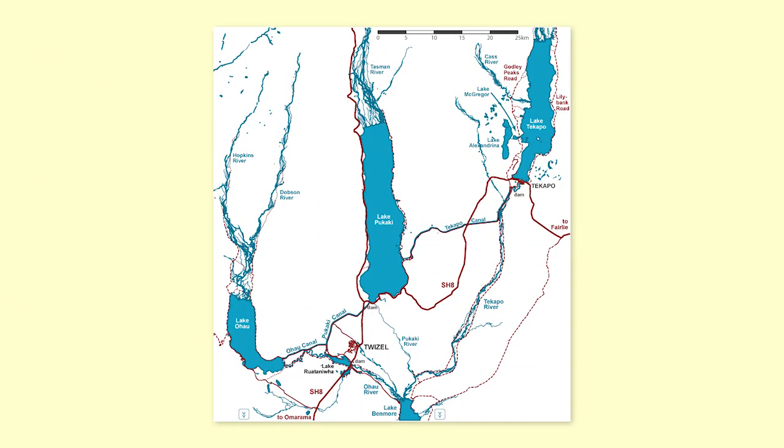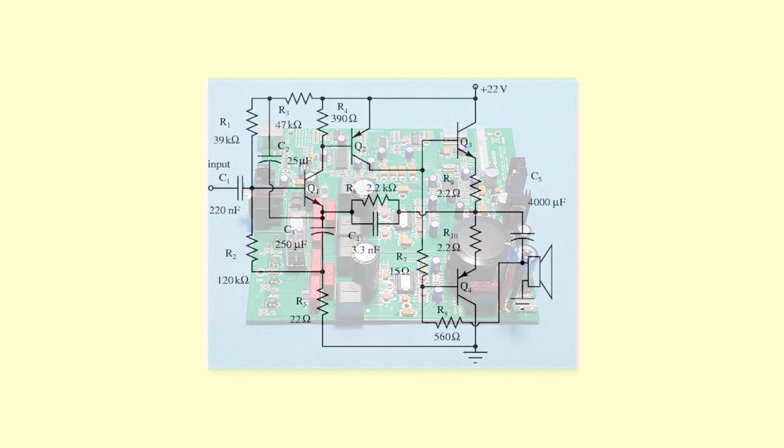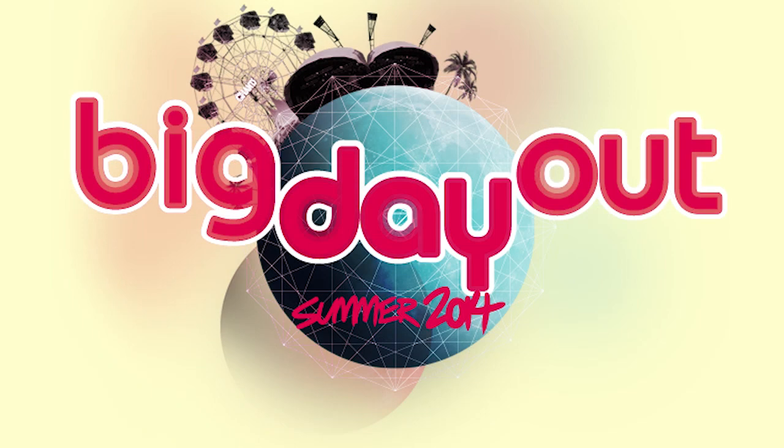Electricity generation planners might use a network model to represent the rivers and canals in the Waitaki River system. An electrical manufacturer might represent a circuit board as a network model. An events planner might use a network model to schedule the activities needed to make sure that an event like the big day out runs smoothly.